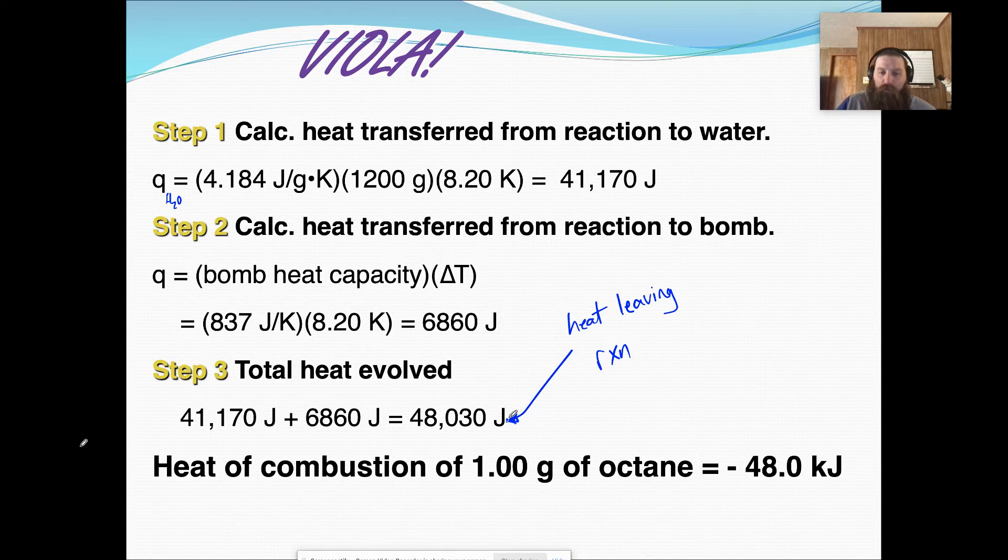It's positive, and that means that since it's leaving the system, since it's leaving the reaction that we're studying, that the actual heat of combustion for octane is negative, because energy is going to leave. So it's an exothermic reaction, so that is a negative number. And we just divide it by 1,000 to get to kilojoules, so we have negative 48 kilojoules.